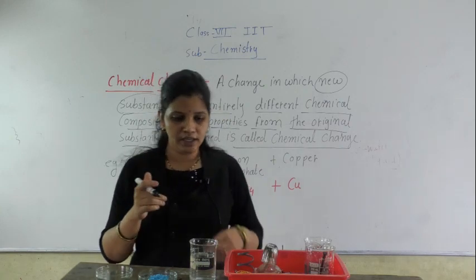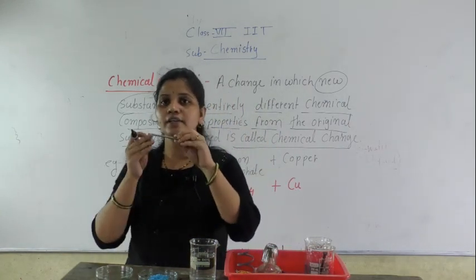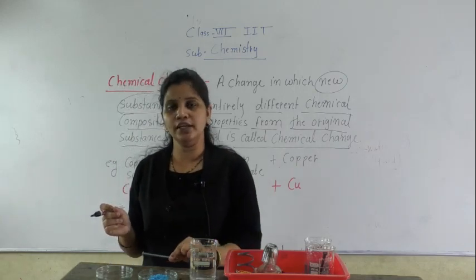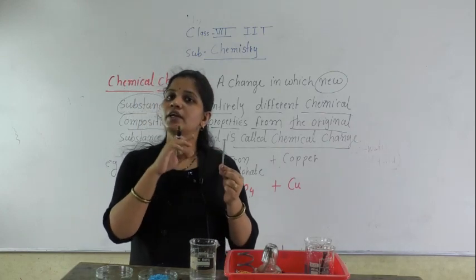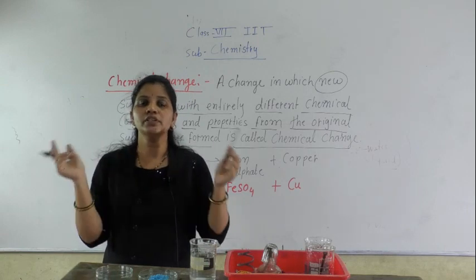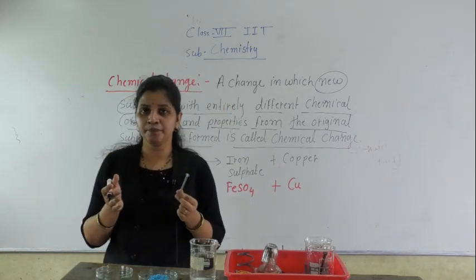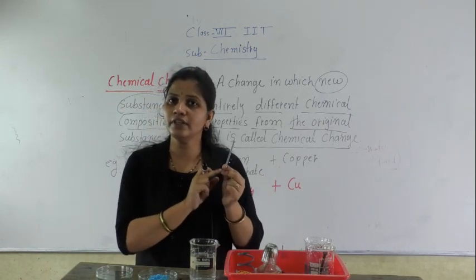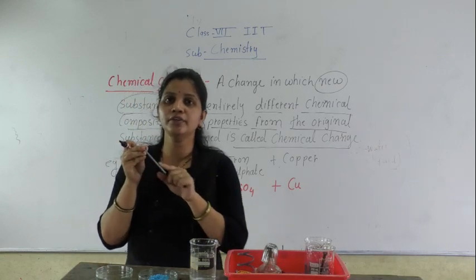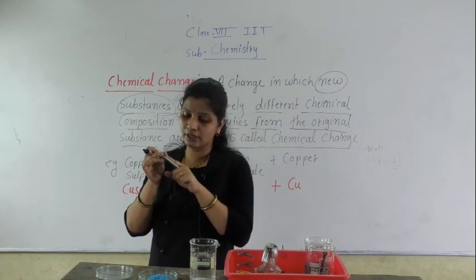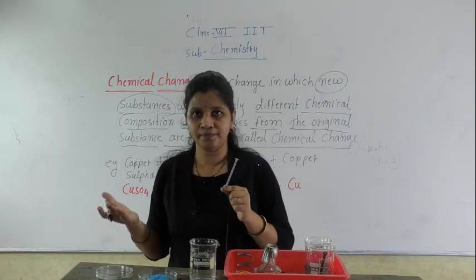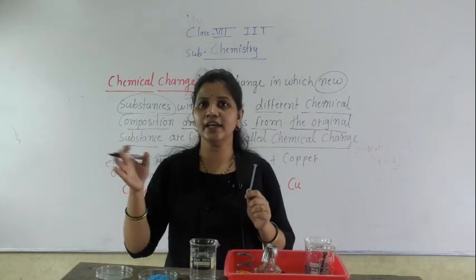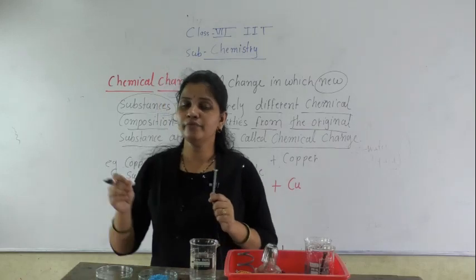When iron comes in contact with air and water — now in our surrounding, in this rainy season, moisture is present, meaning water vapors are here. Because of the moisture, it will react with the iron, and after some time — maybe after one month — you will see a brown color layer. A new substance is formed, so this is a chemical change. To prevent rusting, we apply oil paint. Why? To prevent it from rusting.